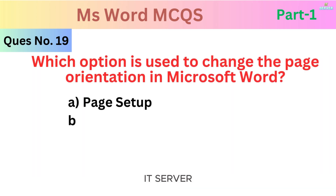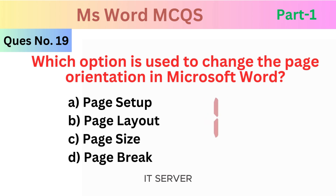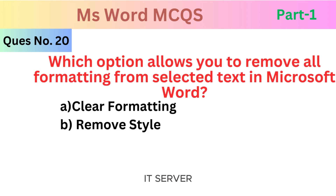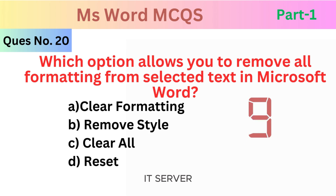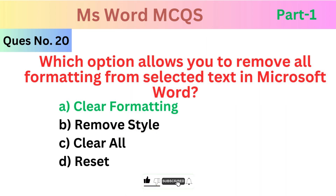Which option is used to change the page orientation in Microsoft Word? Which option allows you to remove all formatting from selected text in Microsoft Word? The answer is Clear Formatting.